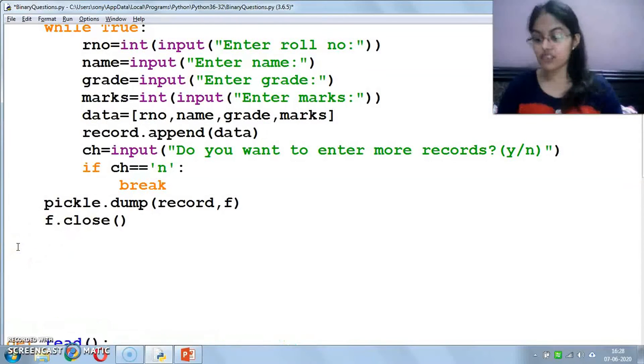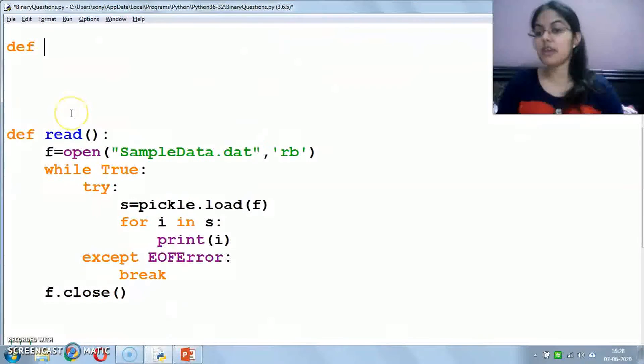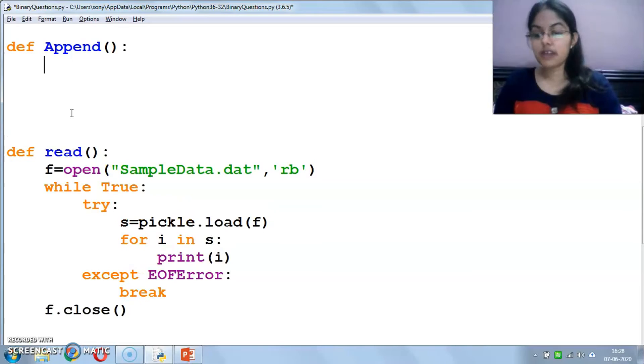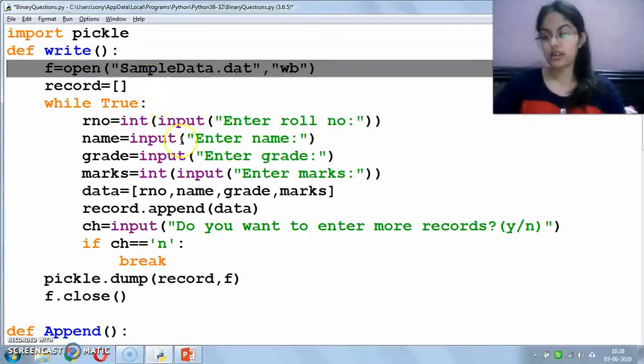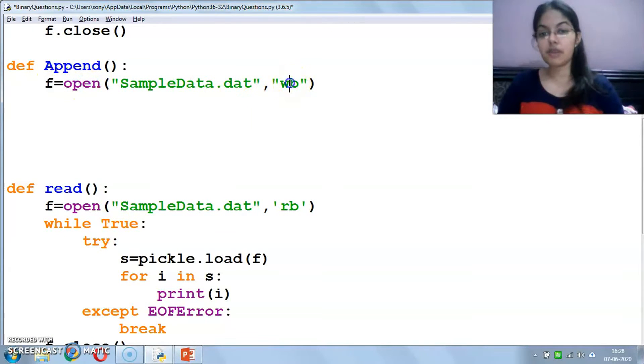Now we will create the append function here. How do we append data in the file? For that, I have taken the name of function as append. After that, we will open the file. Now if I have to append data in the file, I will use AB mode.